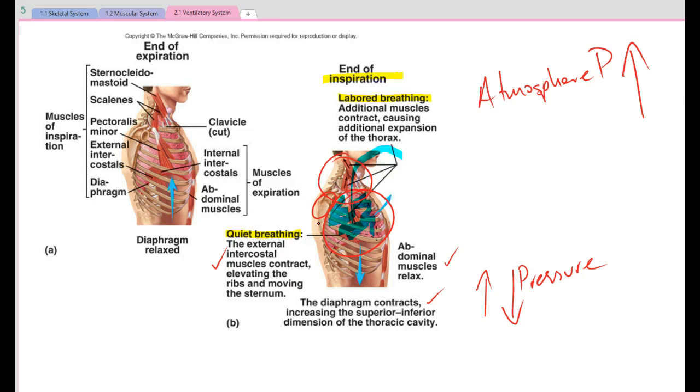Moving on to expiration, so breathing out. Our muscles of inspiration are again around our neck, our pectorals, our intercostals again, our diaphragm.